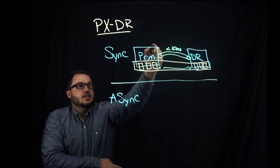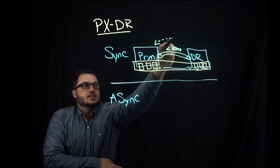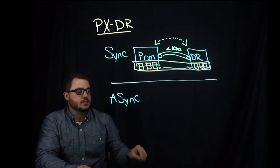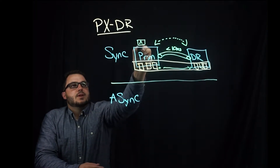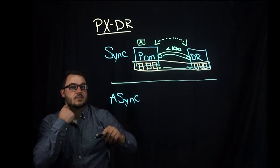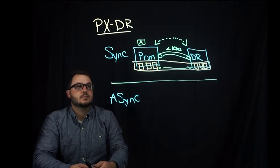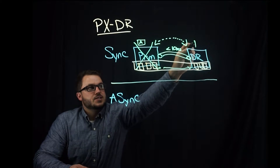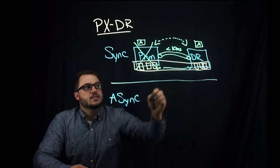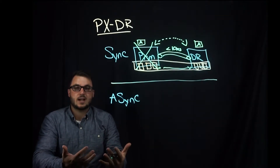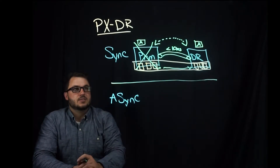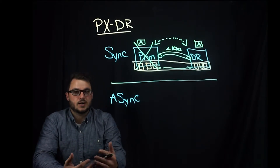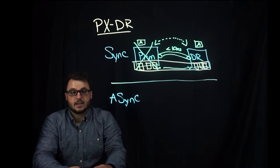We also enable application cluster pairs so that your application can run in your primary site and be replicated from an object and application-aware standpoint. And when a failure occurs, this application is brought up immediately based on the application's inventory of objects, and your data is already available. So your application is good to go — essentially, however fast your orchestration system can bring that application back up.